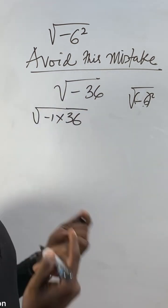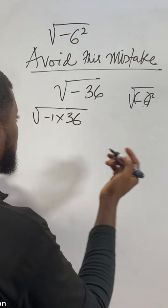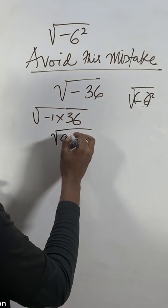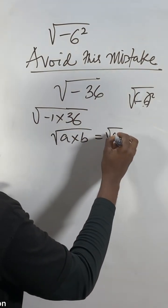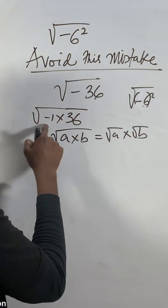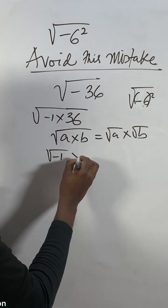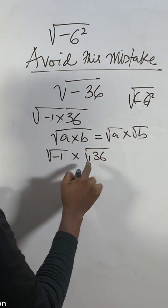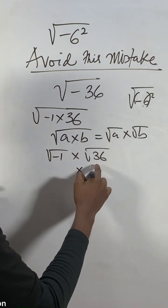So now the same thing you know. SOD now SOD will say if you get root a times b, if you share and say root a times root b. I'm gonna share this one root minus one times root 36. You don't say root 36 will give you six. The square root of 36 will give you six.